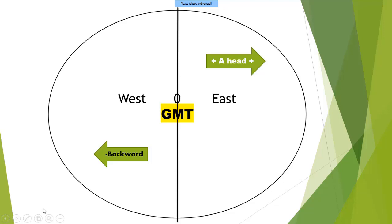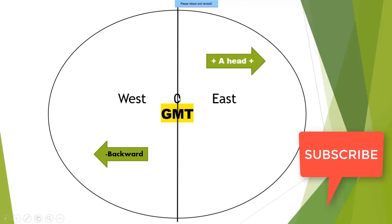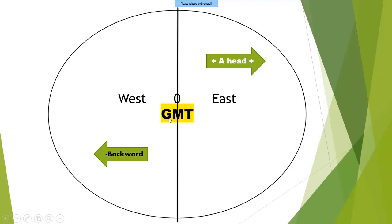This is a globe. We divide it into two parts at zero degree — the prime meridian. GMT, which stands for Greenwich Mean Time, is located at zero degree longitude. It is located on the Thames River in London, a city in England, which is a country in Europe.